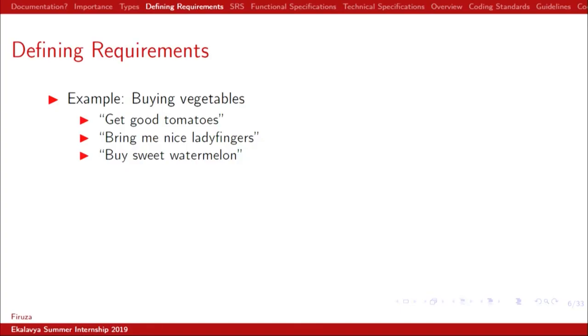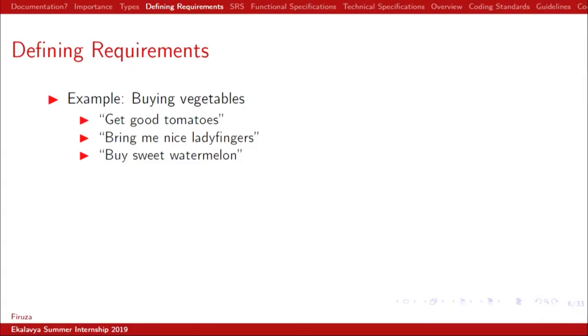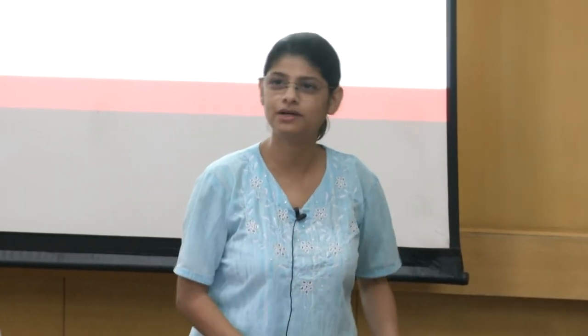Now let's start by defining requirements. How many of you have heard — mommy, daddy telling you to get good tomatoes, get nice lady's fingers, get a sweet watermelon? It's very difficult. My thinking of good tomatoes would be very different from that of my mother. But usually we do get good tomatoes or good watermelon. The reason is because we have been going along with our parents and observing what they are doing. If you tell somebody who is totally unaware of what a tomato is, it will be very difficult.